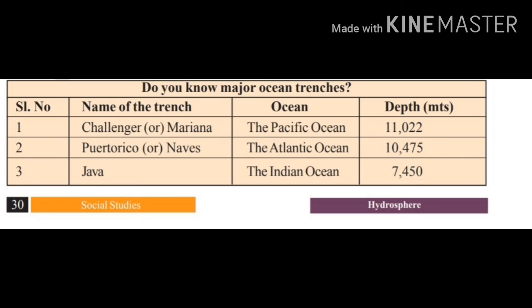The second is the Puerto Rico Trench, located in the Atlantic Ocean, with a depth of 10,475 meters. The third is the Java Trench, located in the Indian Ocean, with a depth of 7,450 meters. This completes today's topics on Oceans and Relief of the Oceans. Thank you.